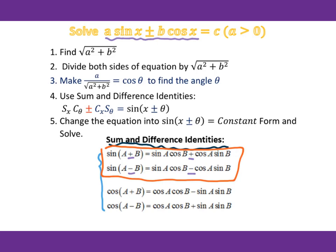For cosine, you have to remember this one is positive and then it's negative — that's the opposite sign. Here's a negative, this is a positive. It's easy to mess up with this sign. That's the reason in this lesson I choose the first two identities to solve this kind of equation.